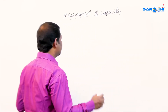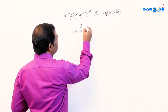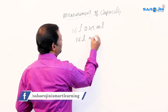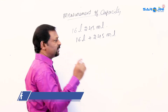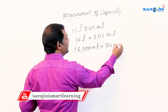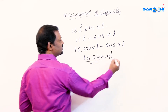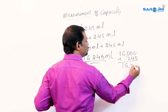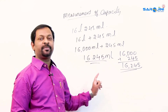Let's check some examples. Suppose 16 liters 245 milliliters is given. You can split it as 16 liters plus 245 milliliters. Since 1 liter equals 1000 milliliters, 16 liters means 16,000 milliliters, plus 245 milliliters, which makes 16,245 milliliters. In this way we can convert liters and milliliters into only milliliters.